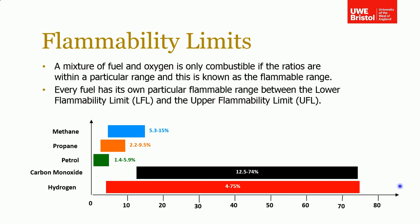Likewise, from the other end, if you have 100% fuel there's no combustion either, so you need some oxygen. When you reach around 75% fuel and 25% air, combustion can begin. Hydrogen has a particularly wide flammability range, which raises some question marks about its suitability for automotive applications. The key point is that each fuel has its own flammability limits — you can't keep increasing or decreasing the air-fuel ratio indefinitely and still sustain combustion.